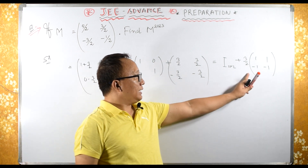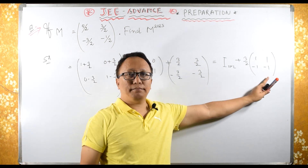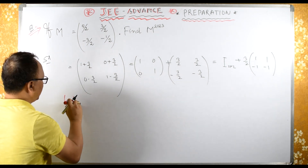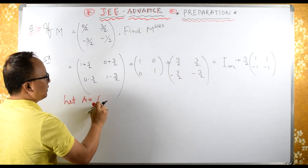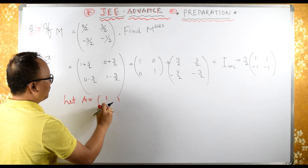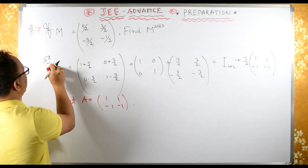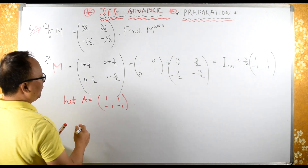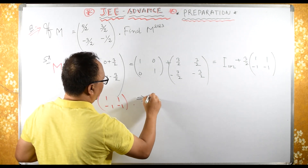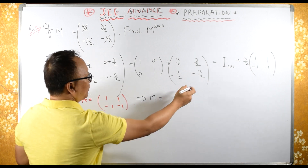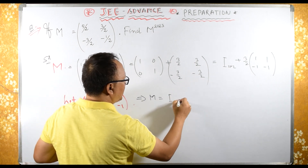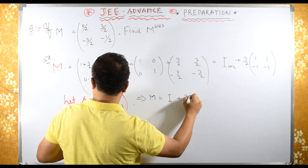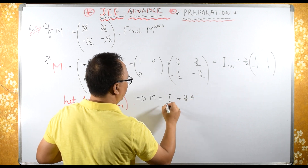Now let us consider this matrix A, where A equals 1, 1, minus 1, minus 1. This is my M. Therefore, M equals the identity matrix plus (3/2) times A.